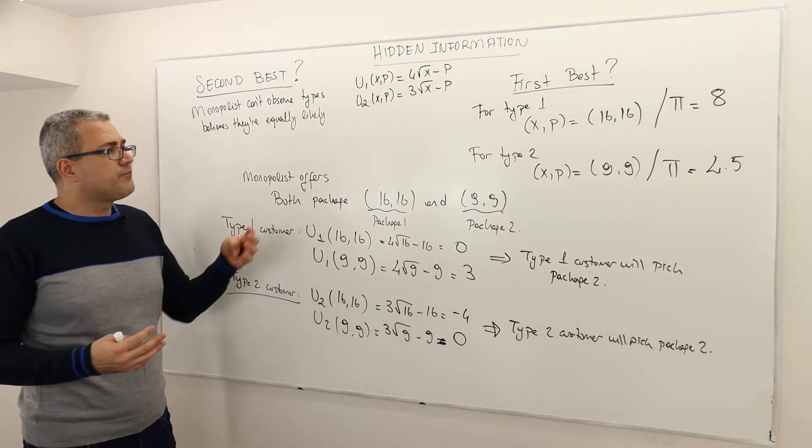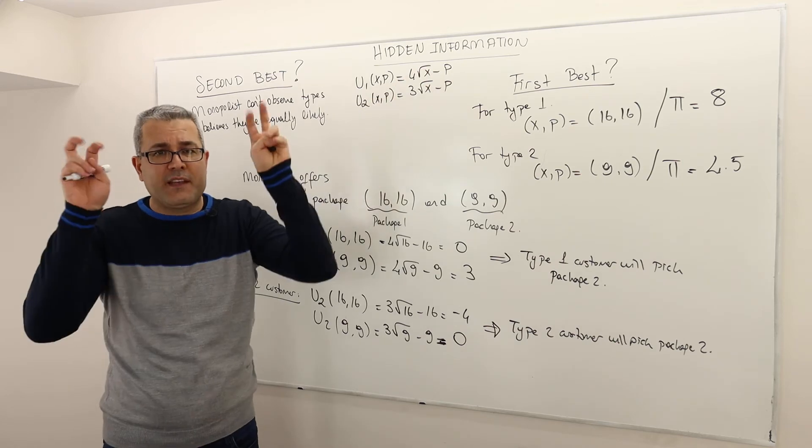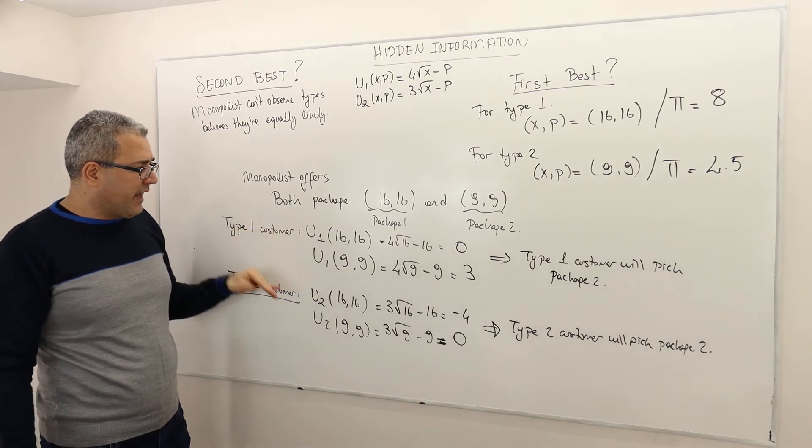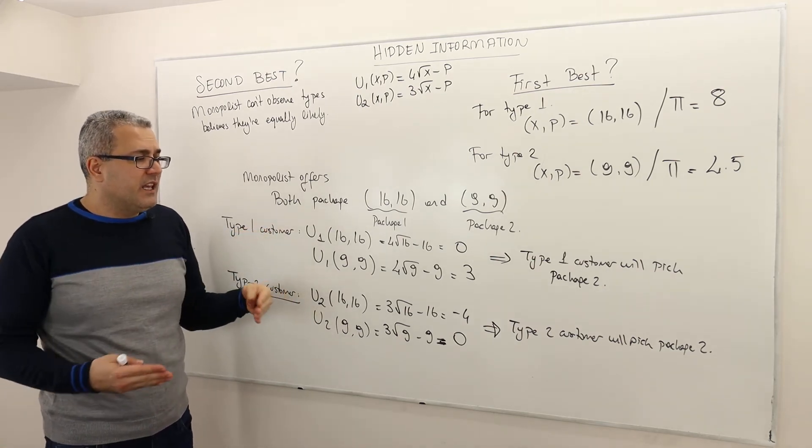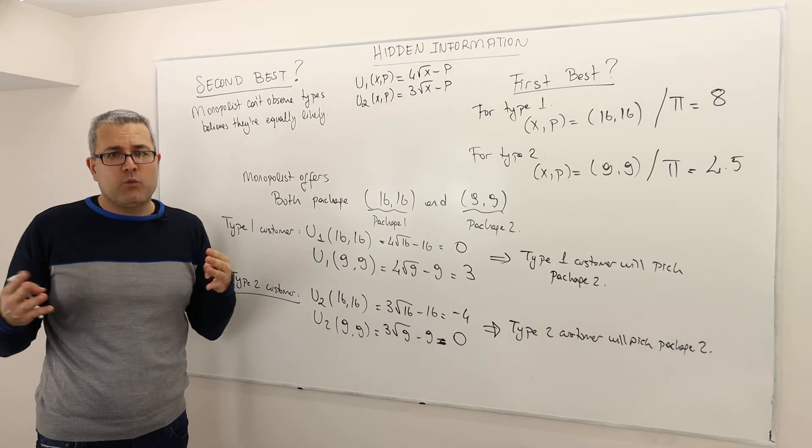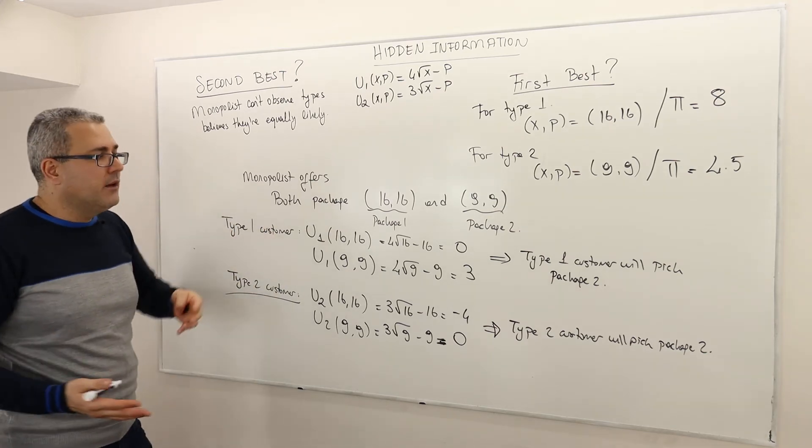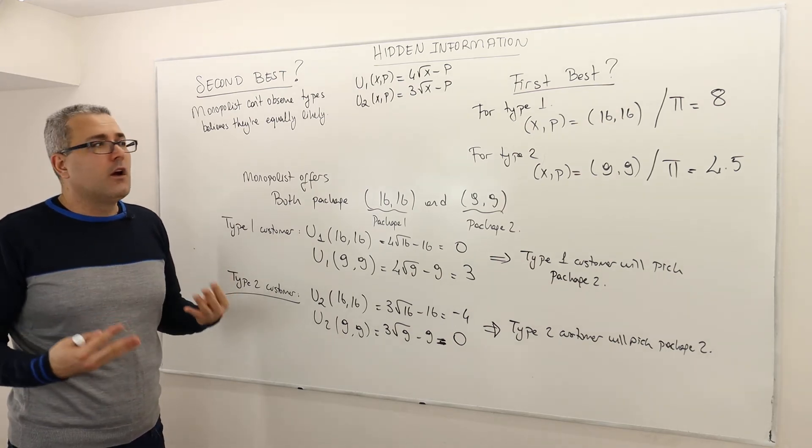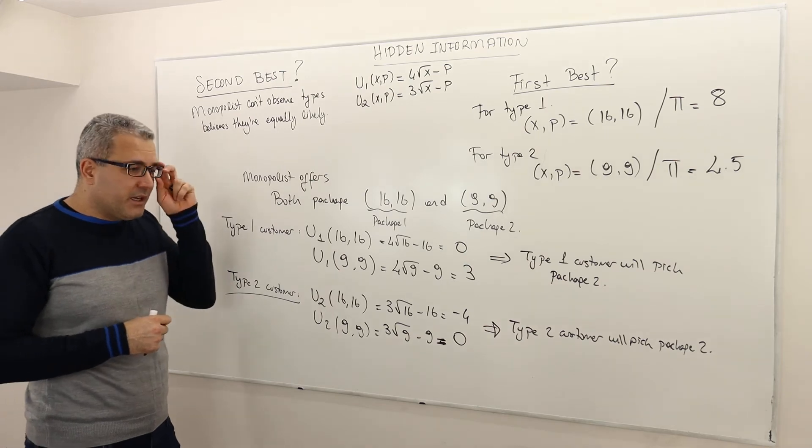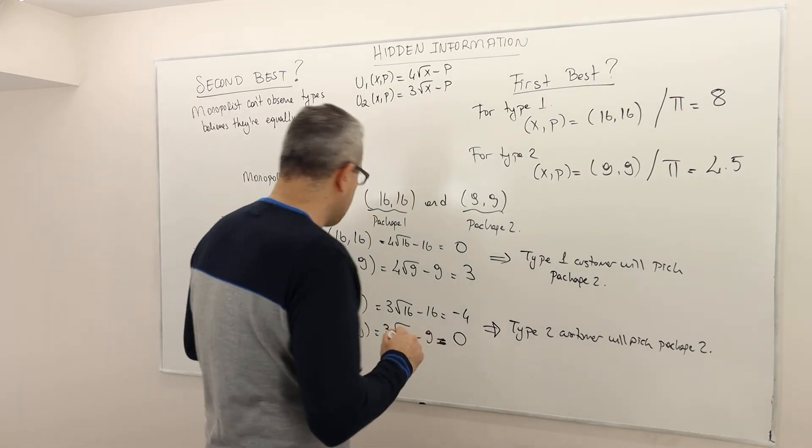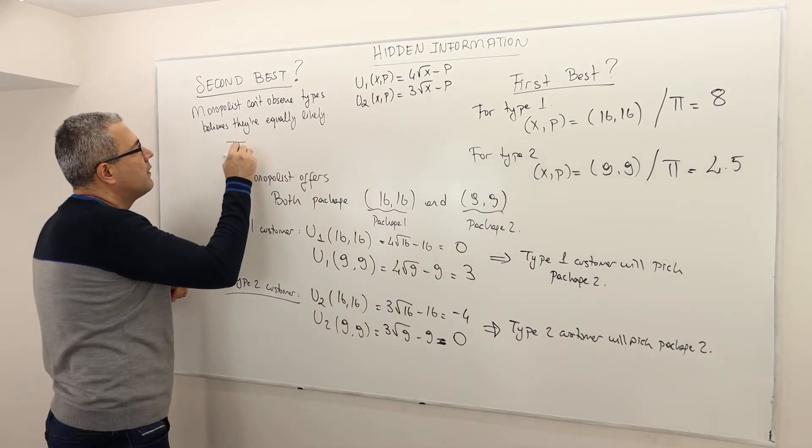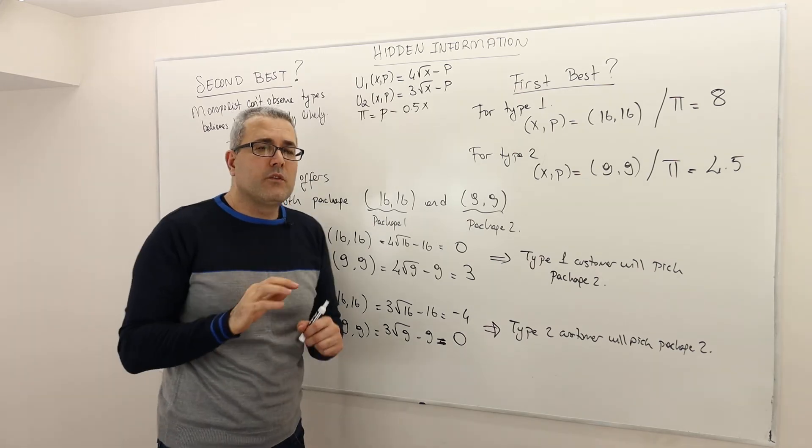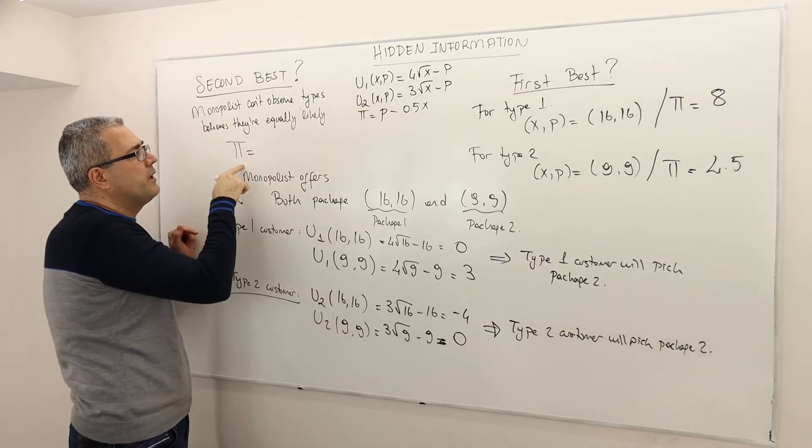So conclusion. If the monopolist offers those first best packages, what's going to happen is that both type one and type two customers are going to buy the package two. Nobody will buy package one. Fine. But the problem is what's going to be the profit of the monopolist? So here is what the profit will be.